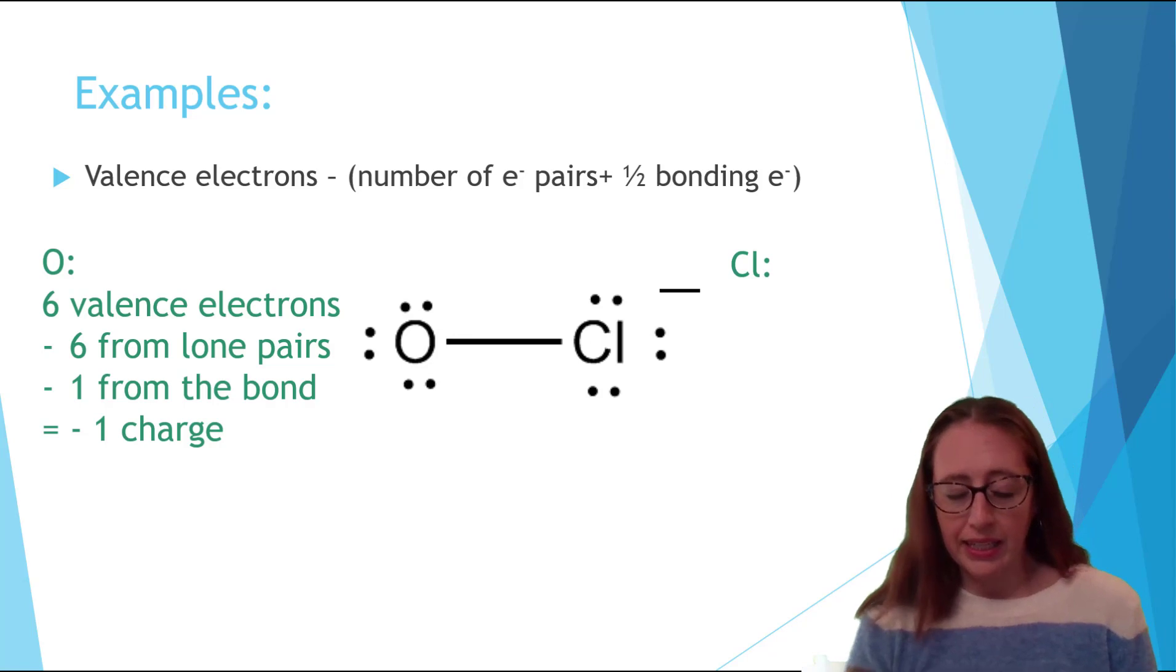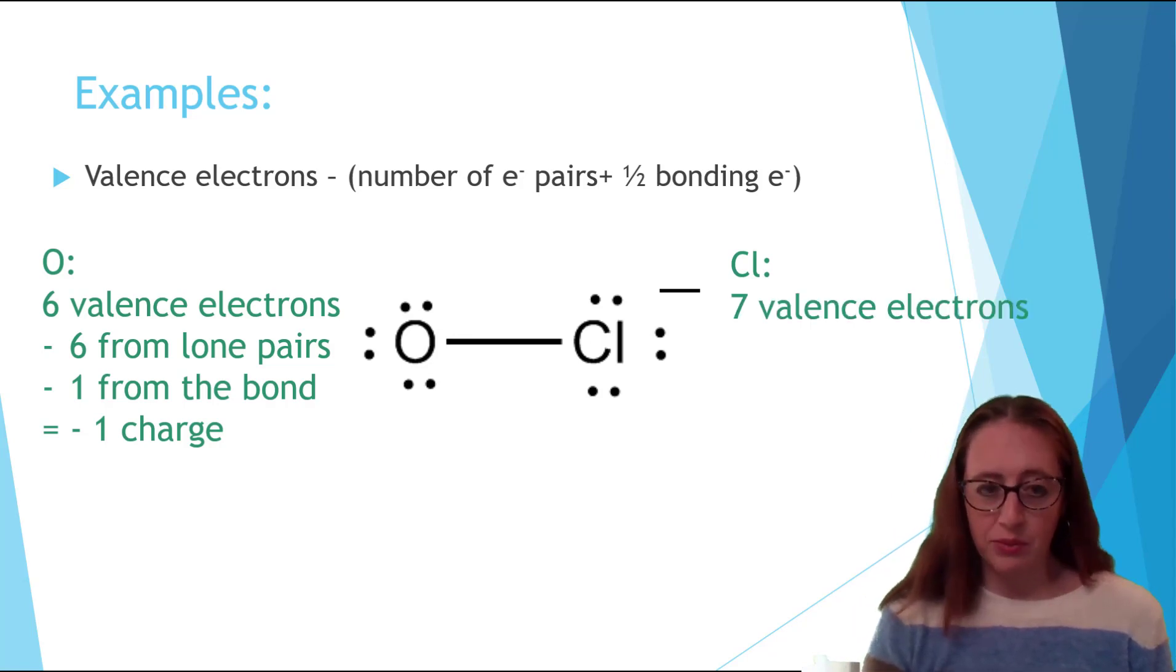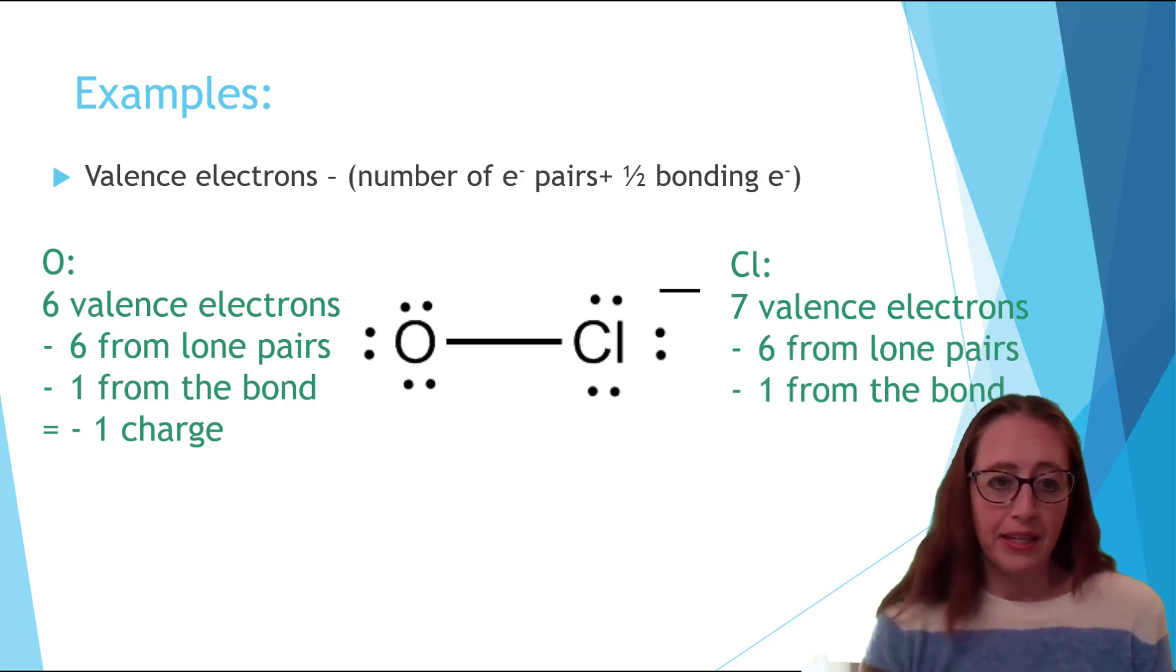For the chlorine it has seven valence electrons which we can get from going to the periodic table and I have earlier videos on how to do that if you need help with that and I'll link those at the end. Here we have six from the lone pairs and one from the bond. This gives a total of seven minus seven equals zero as its charge.